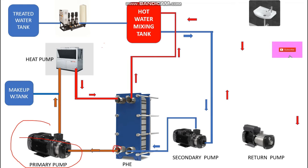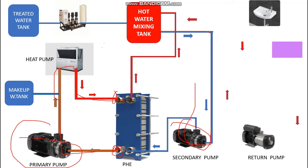Clearly, the work of the primary pump is to take water from the PHE and feed it to the heat pump. The work of the secondary pump is to take cold water from the hot water mixing tank, feed it to the PHE, and at the leaving side it generates hot water which is fed back to the hot water mixing tank.